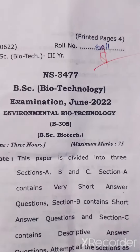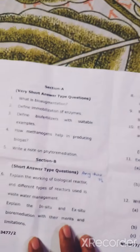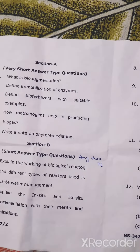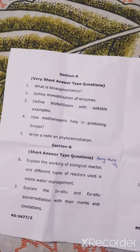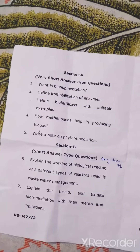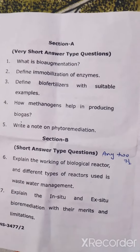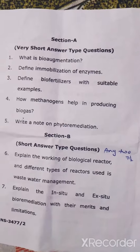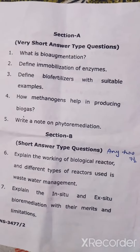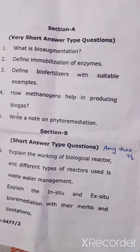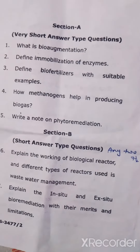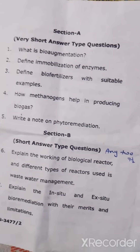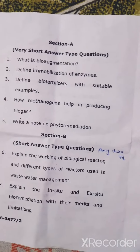If we talk about the pattern of the question paper, the pattern was based on sections. There are some subjects in which we don't have sections — we have 10 questions given and we attempt 5 questions, all long questions. But I have made a video about molecular biology where there was a pattern with 3 sections. The next question paper is environmental biotechnology. The other subjects that have been examined have 10 questions given. So let's discuss the pattern of environmental biotechnology.